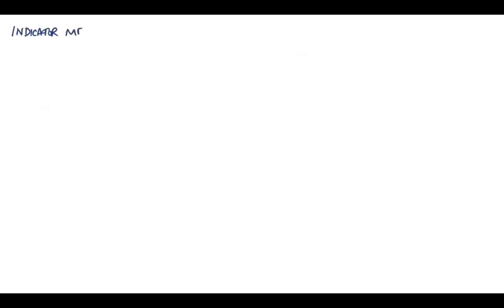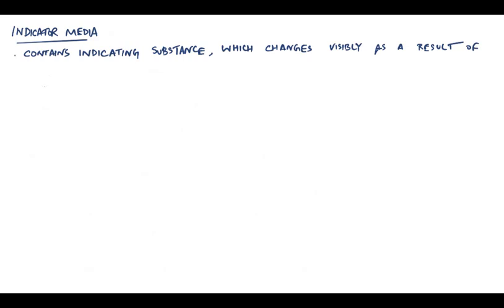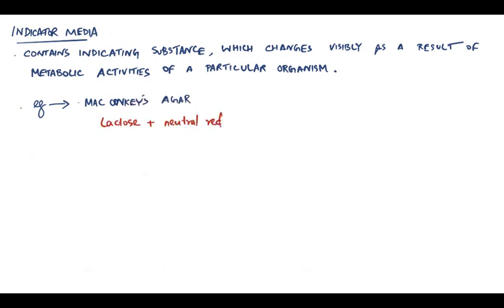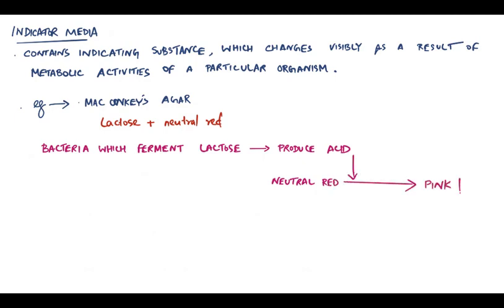Now on to indicator media. As the name implies, it contains some indicator substance which changes visibly as a result of metabolic activities of a particular organism. Let's look at MacConkey's agar media. It contains lactose and neutral red. So, if a bacteria ferments lactose, it produces a lot of acid which converts the neutral red to pink. Another example is blood agar media where hemolysis is the indicator.